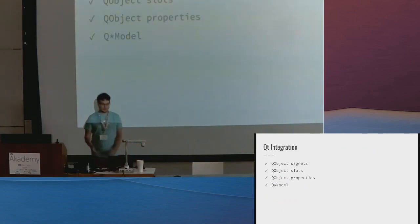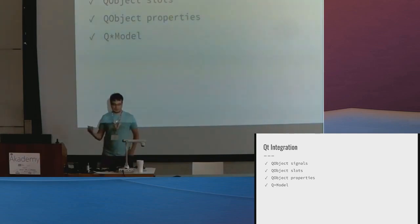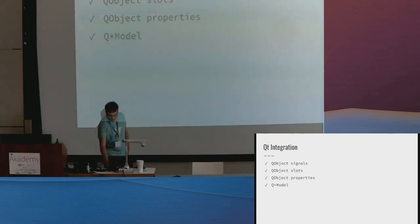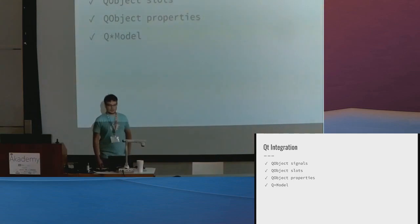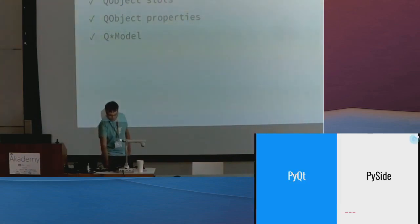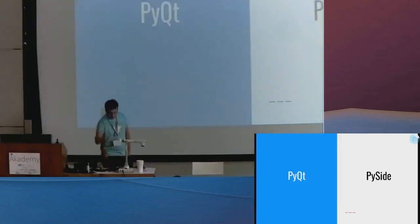So I could have all my Qt objects with signals, slots, and models in Python code, but still have all the power of QML as a user interface on the other side. So, how does this actually work?